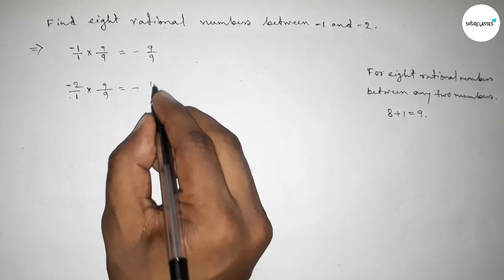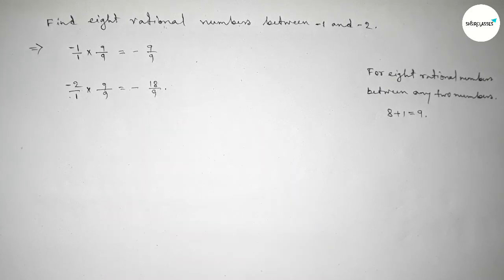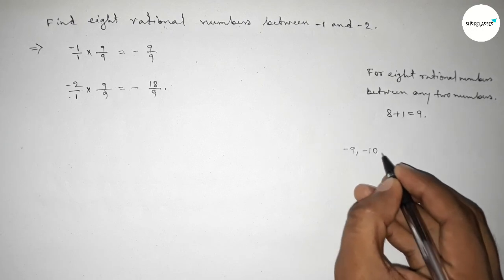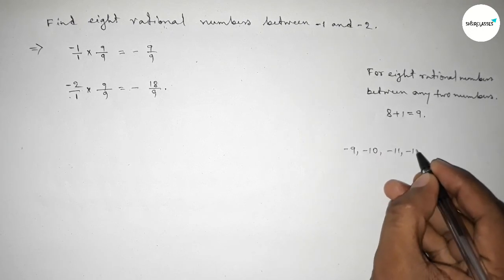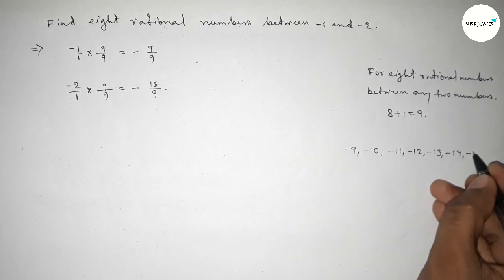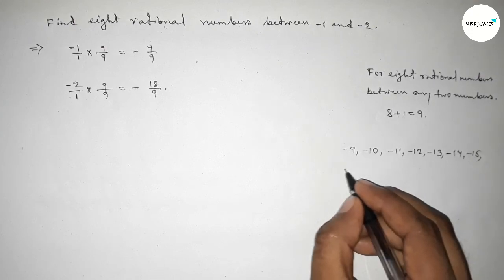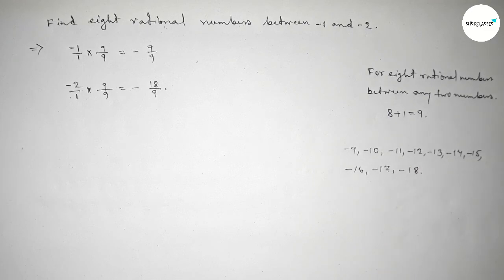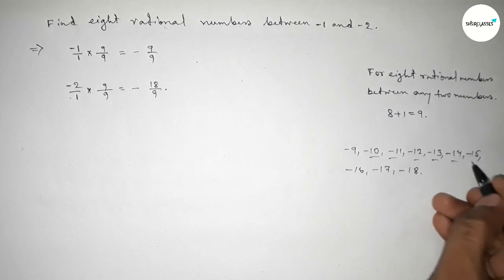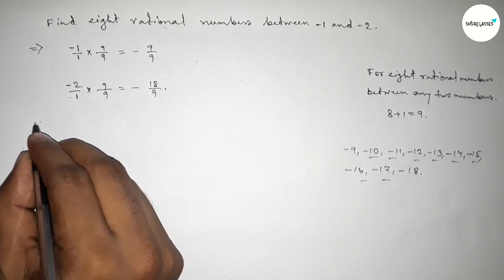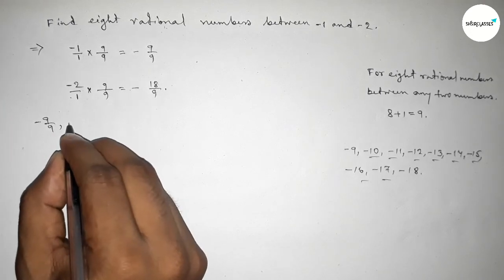And here minus 18 over 9. Now between minus 9 over 9 and minus 18 over 9, we can get 8 negative integers. So first write down all the negative integers. Among these, these are the 8 negative integers.